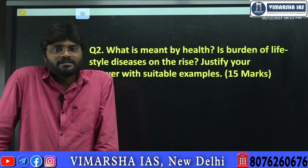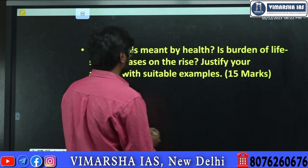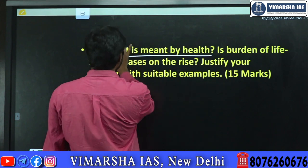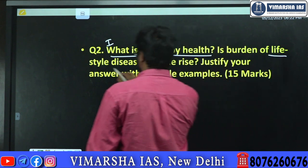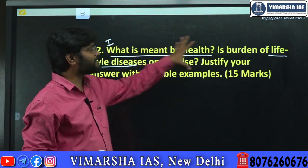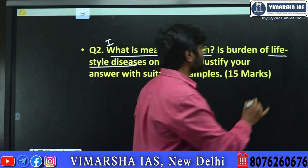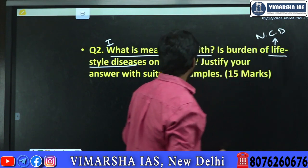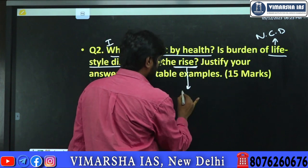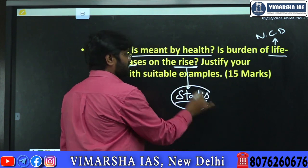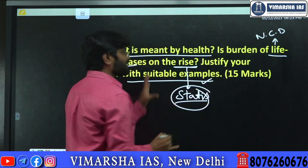The first thing a student must do is identify the keywords in this question. The first part asks: what is meant by health? The second keyword is lifestyle-related diseases — there are many classifications of diseases, but here the particular focus is on lifestyle diseases, also referred to as NCDs, non-communicable diseases. Third, is it on the rise? Statistics are important to show as evidence. Fourth, what kinds of diseases should be given as examples? First, fragment the keywords, then attempt the answer based on them.